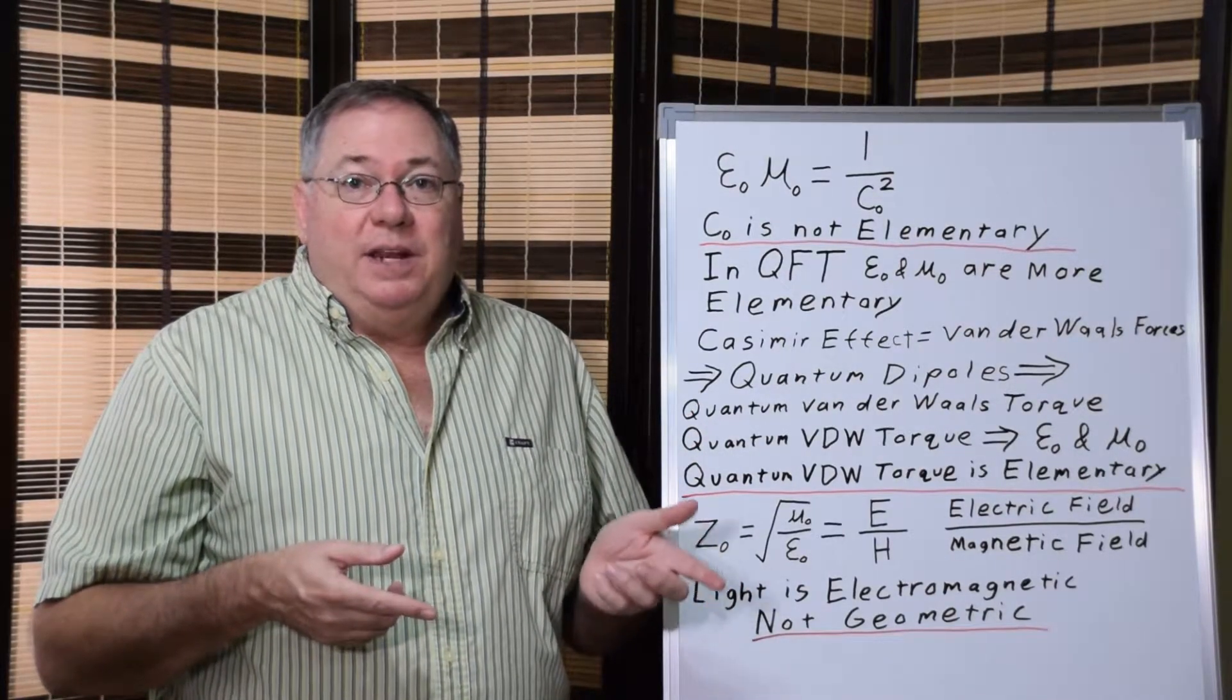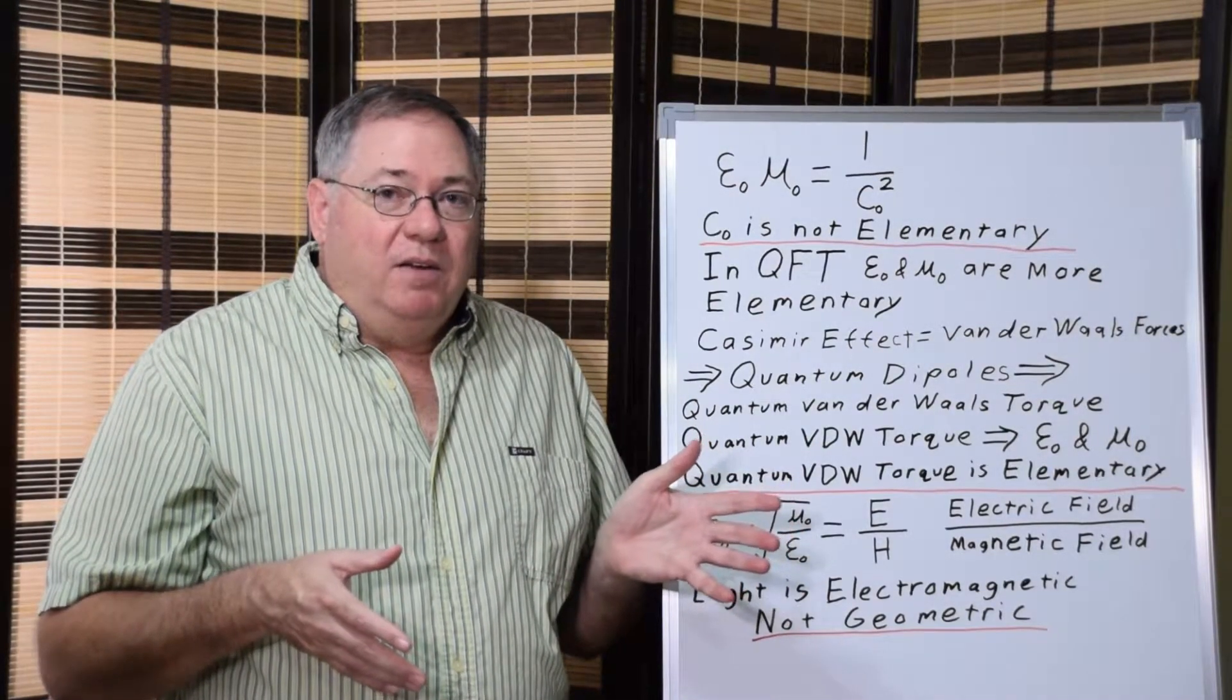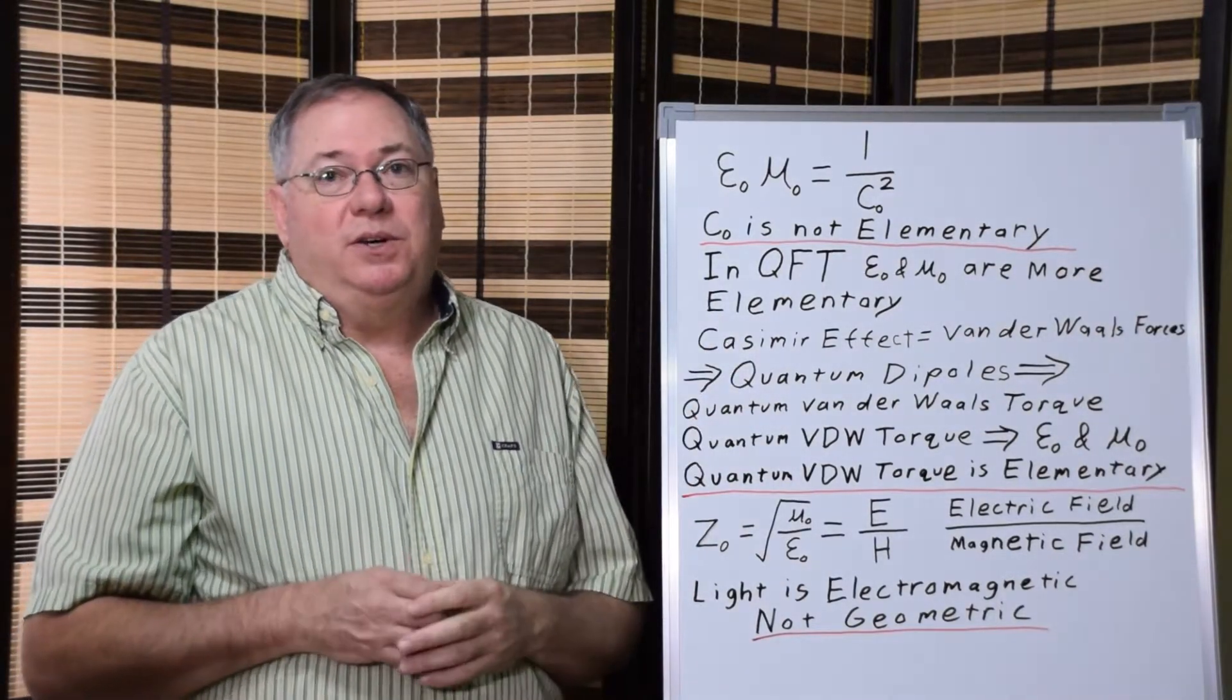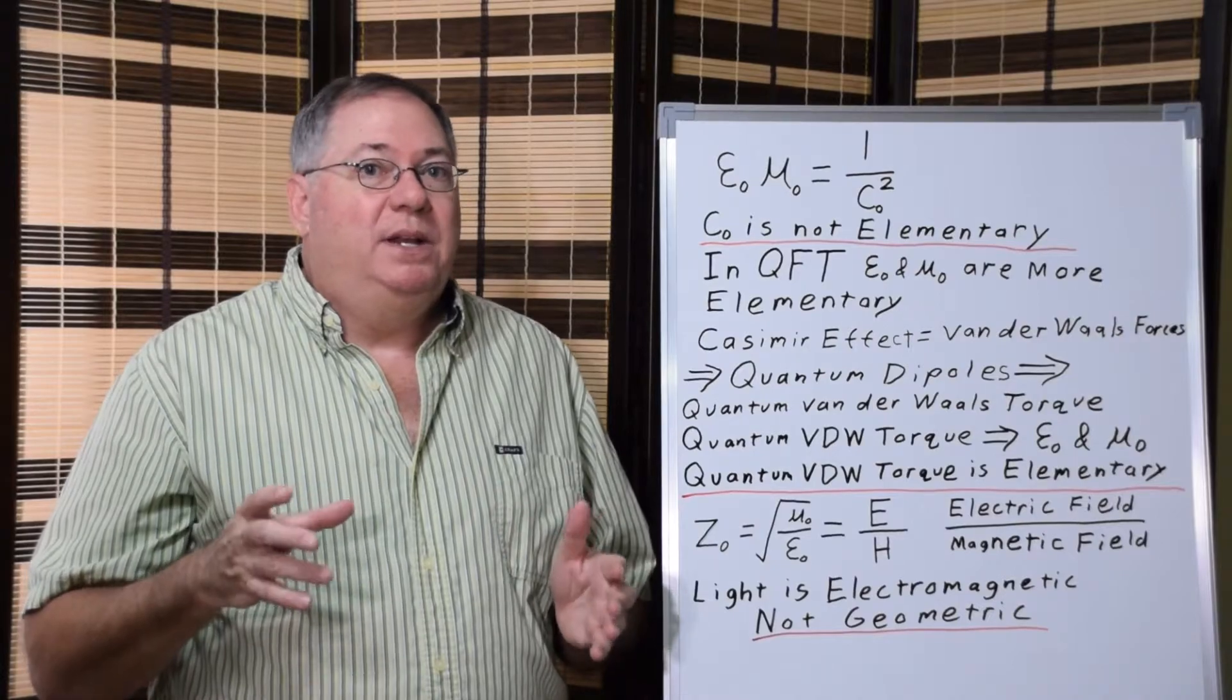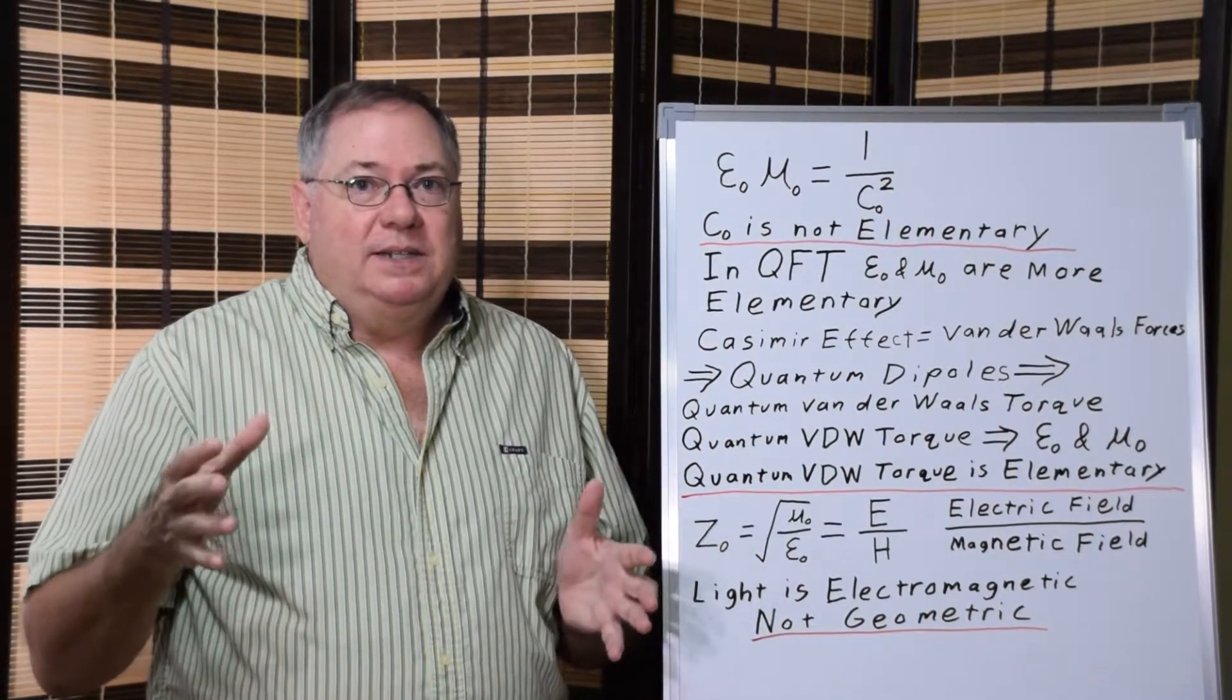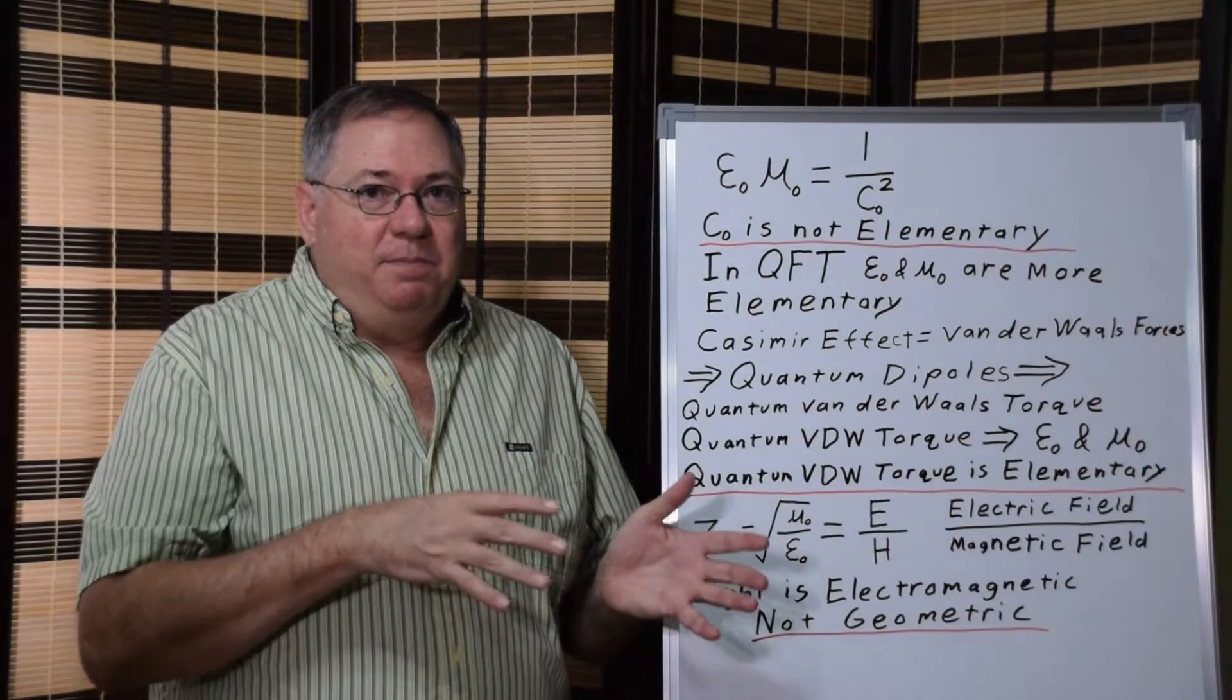And we know that because the speed of light limit is the same for electrically neutral objects as it is for electrically charged objects. So it comes from the same source. And the magnitude of the permittivity and permeability constant is the same whether you're talking about electrically neutral or electrically charged objects. So all of the speed of light for everything is regulated by these quantum Van der Waals torque. And quantum Van der Waals torque is what determines the permittivity and permeability. And we can think of permittivity in terms of the polarizability of space.